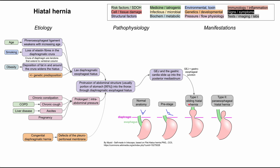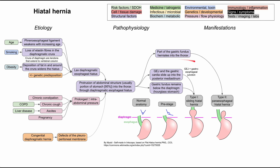For type 1 sliding hiatal hernia, the gastroesophageal junction and the gastric cardia slide up into the posterior mediastinum. The GEJ is now above the diaphragm, which is pathologic. The gastric fundus remains below the diaphragm, giving you an hourglass stomach shape where the stomach is compressed by the esophageal hiatus. For type 2 paraesophageal hiatal hernia, it's kind of the opposite — the gastric fundus pokes up into the thorax, while the gastroesophageal junction remains in its proper position below the diaphragm.